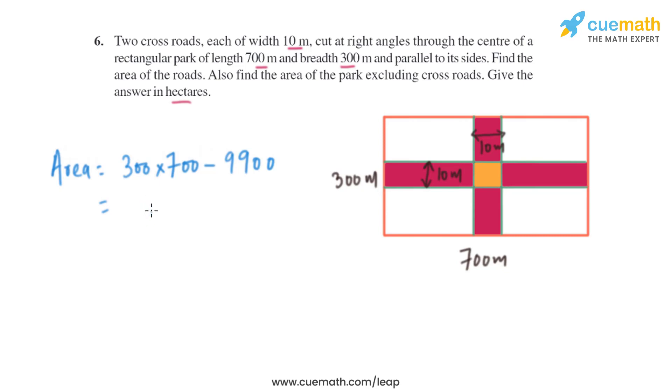On solving this, we get 210,000 square meters. That will be the area of the park excluding crossroads. When we convert it into hectares, we divide by 10,000: 210,000 ÷ 10,000 = 20.01 hectares. That will be the area of the park excluding crossroads.